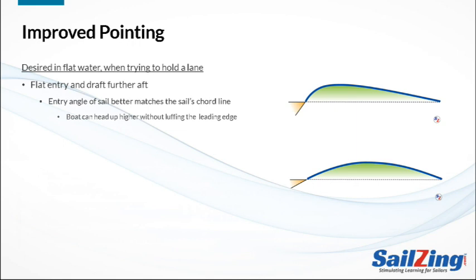In both of these drawings, the sail is trimmed so that the leading edge is aligned with the apparent wind, keeping the luff of the sail full. The flatter entry lets the boat sail closer to the wind. With a round entry, the skipper has to bear off further to get the leading edge aligned with the wind.